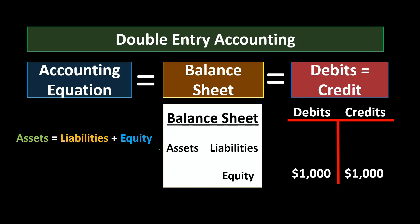Both areas are going to be using the double-entry accounting system. Finance and accounting both need to understand it. Finance needs to understand it with regard to the balance sheet and the accounting equation — understanding the relationship between assets, liabilities, and equity. They don't typically need to spend a lot of time thinking about the double-entry accounting system on a transaction-by-transaction basis or in terms of debits and credits themselves. The better you understand how actual transactions create the financial statements, the better your understanding of the relationships between financial statements and what the ratios are telling you.